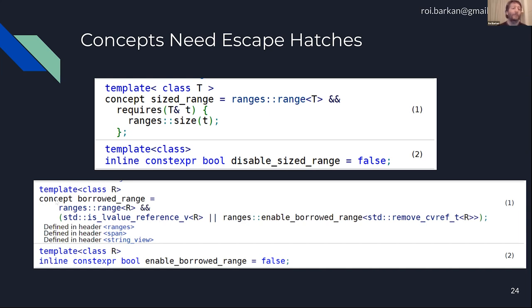Many times, even in the STL, when people implement their own concepts they understand that semantics matter and sometimes syntax alone isn't enough. They want to give the users some way to customize, some way to specialize — because concepts themselves cannot be specialized. They have to bring in constexpr Boolean friends from C++14 and use them inside concepts to give escape hatches for applications to tell the library whether specific concepts apply to specific types.